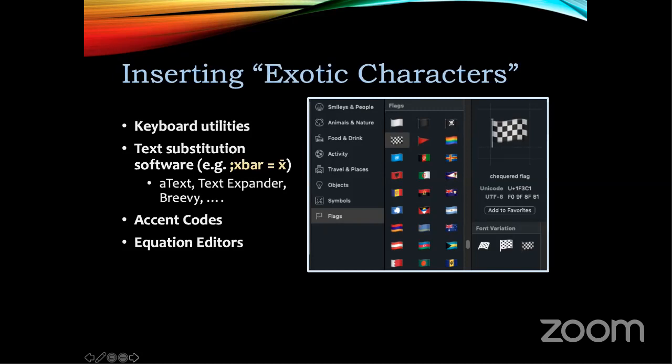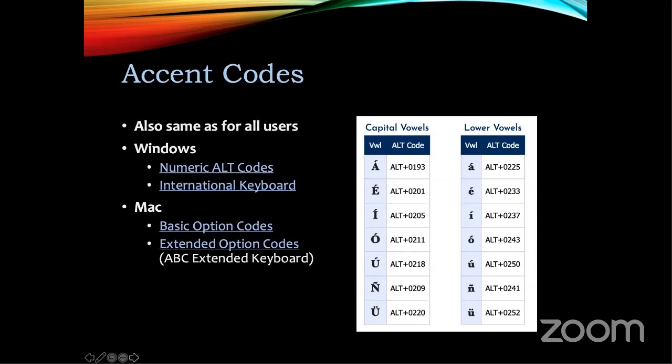Once you have the fonts, you need to figure out a way to insert characters. These include keyboard utilities, text substitution software — I'm a fan of text expanders like Breevy, which let you set up codes like 'semicolon x bar equals' and get an x with a line over it, which is useful for statistics — accent codes, equation editors, and inserting emojis such as national flags. All of these now have Unicode code points so you can text flags regardless of which phone you're using.